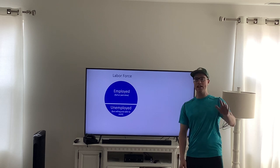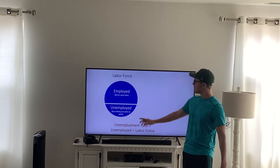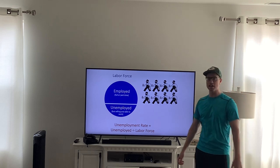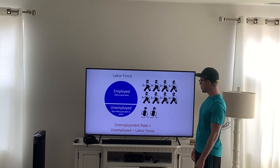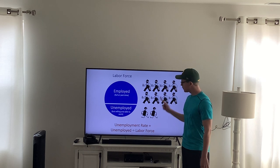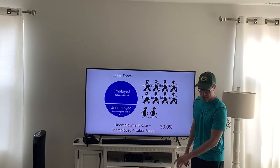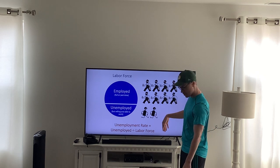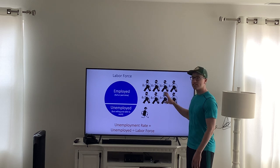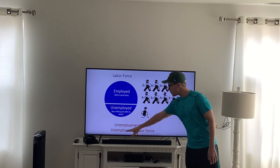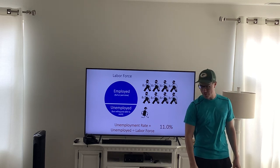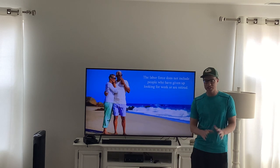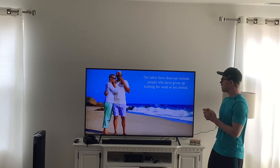How do we calculate our unemployment rate? It's pretty simple: you take your number of unemployed people and divide it by your total labor force. For example, if 8 people are working and 2 are unemployed, the total labor force is 10, so the unemployment rate is 2 divided by 10, which equals 20%. If we reduce that to 1 unemployed out of 9 people total, then 1 divided by 9 gives about an 11% unemployment rate. The labor force does not include people who have given up looking for work or who are retired.